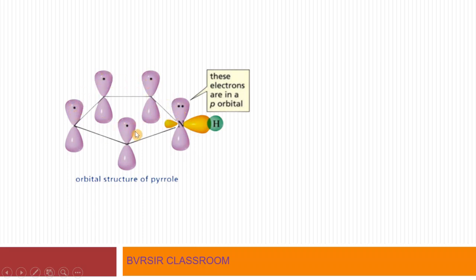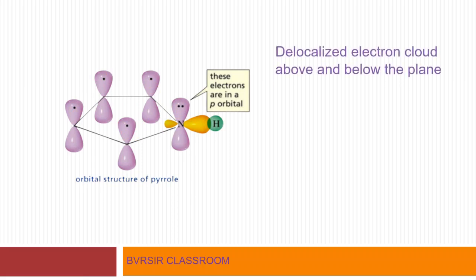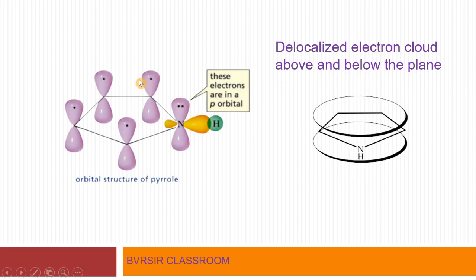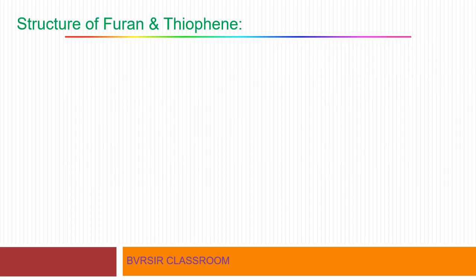There is a delocalized electron cloud above and below the plane — this is the actual arrangement of the pi electron system. The pi bonds form, and with six electrons total, this results in an aromatic sextet.